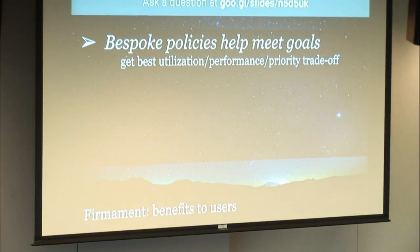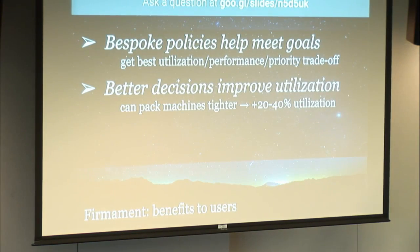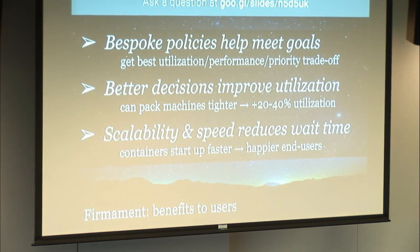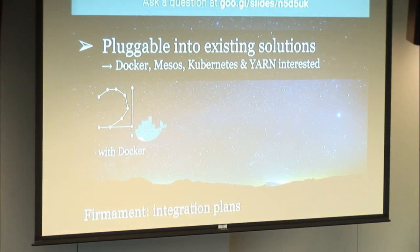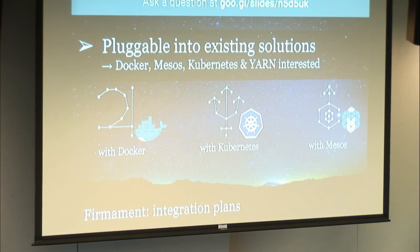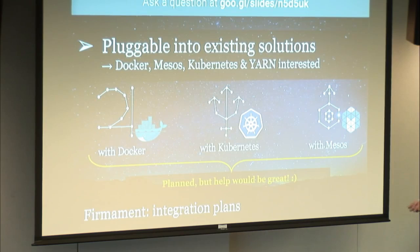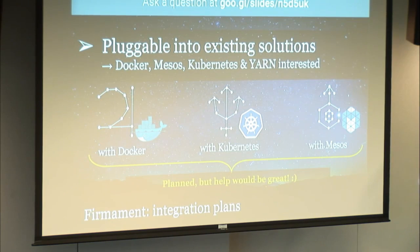The benefits: you can customize Firmament with a custom scheduling policy, make better decisions, achieve 20–40% utilization improvements, get good scalability, and have containers start up faster. As for how to use it — Firmament is academic research, but we can make it available by plugging it into existing systems as a pluggable scheduler. The Docker, Kubernetes, and Mesos communities have all approached us about integration. We're planning an integration and have worked on one with Kubernetes. If you want to integrate it with your favorite cluster manager, it's on GitHub under the Apache license, and we'll be happy to support your help.